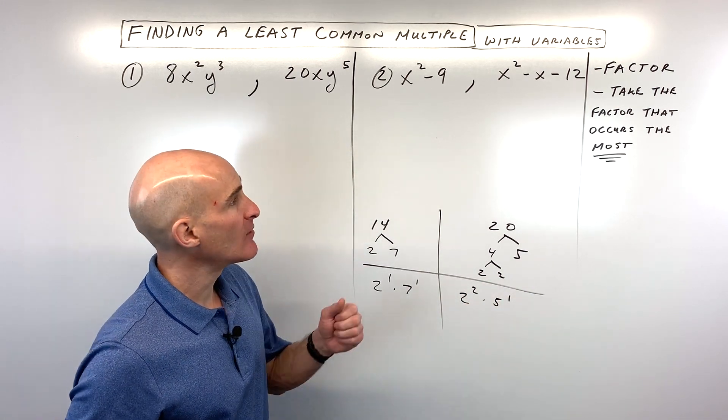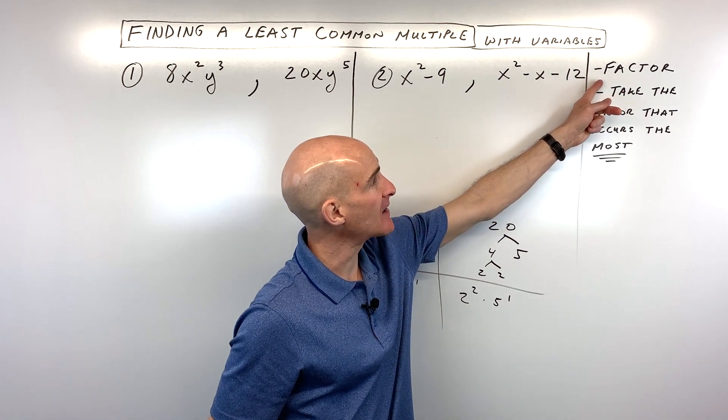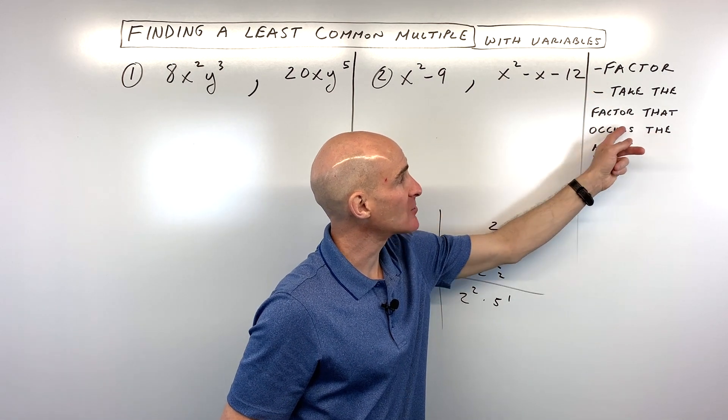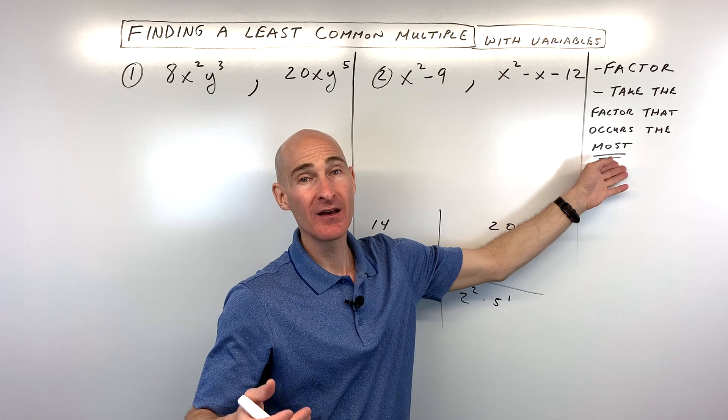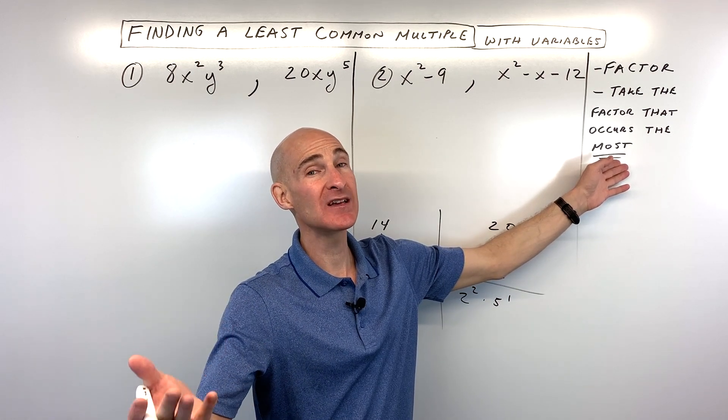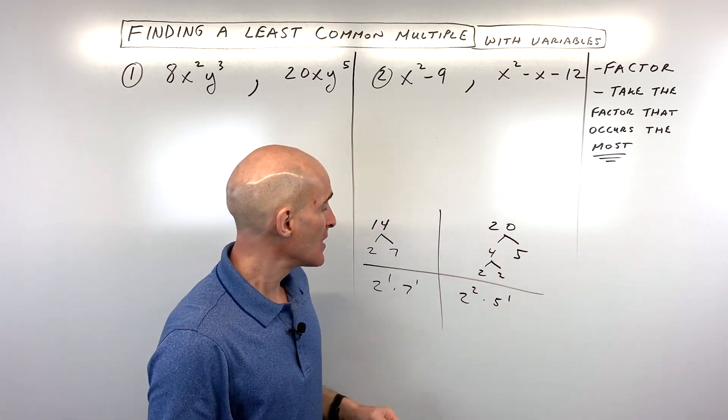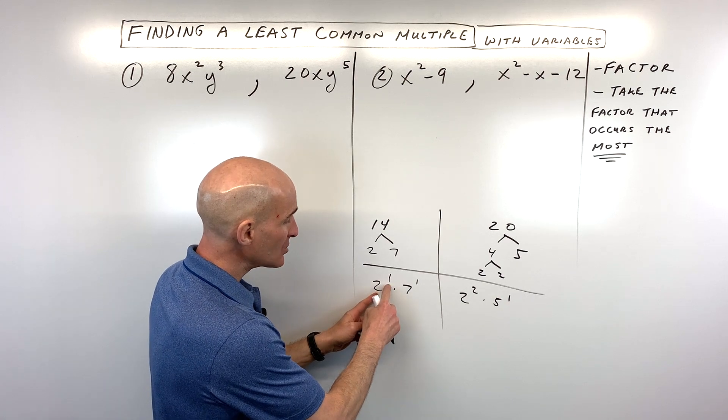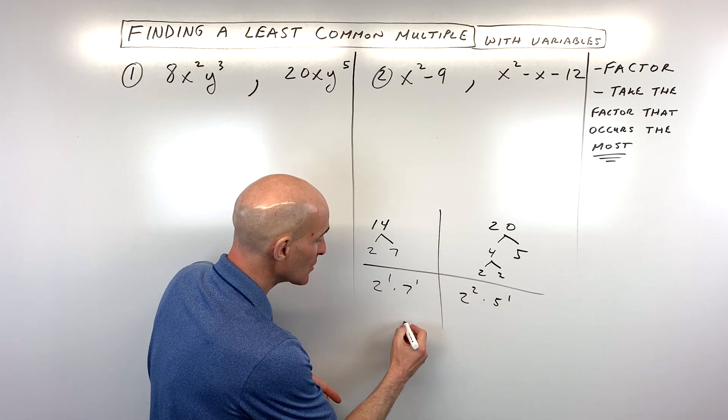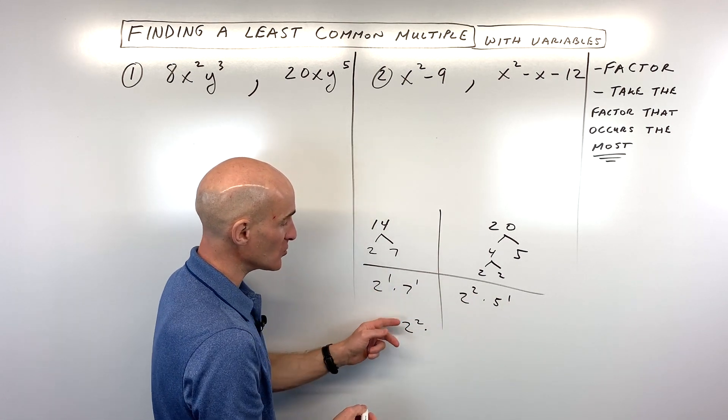Now when you find the least common multiple, follow these steps. First factor, then take the factor that occurs not the least - it's called the least common multiple, but we want to take the one that occurs the most. So here we've got 1 two, 2 twos, so we're going to take the one that occurs more, 2 twos.